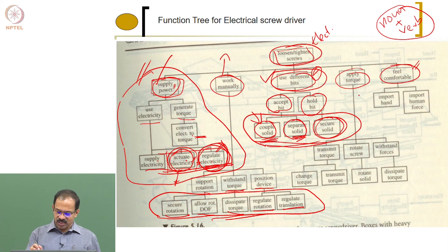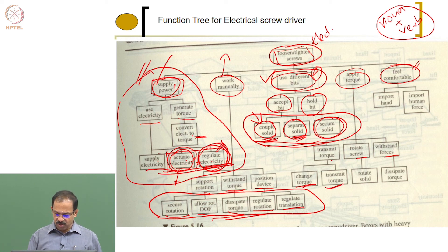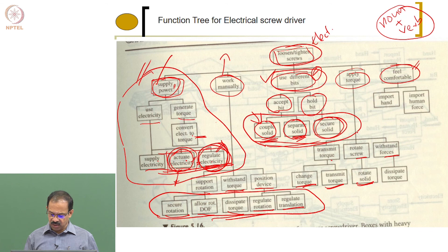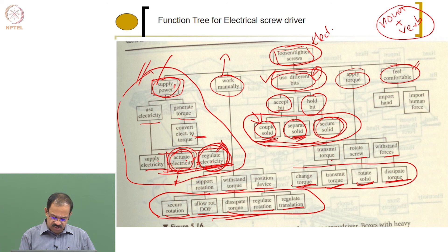For apply torque, the sub-functions are: transmit torque, rotate screw, withstand forces, change direction of torque, and dissipate torque to control vibration. These are the lower-level functions for this particular critical path function.